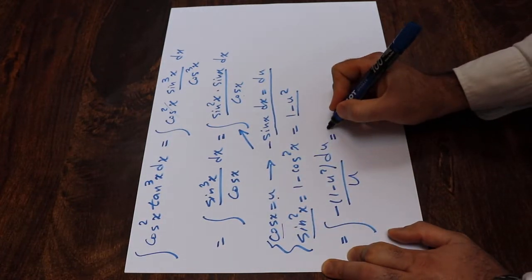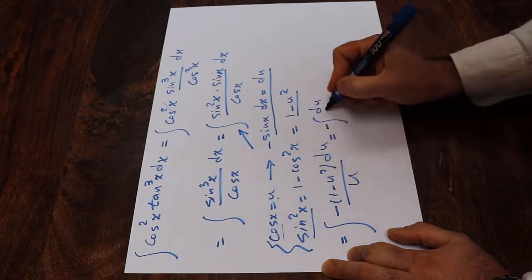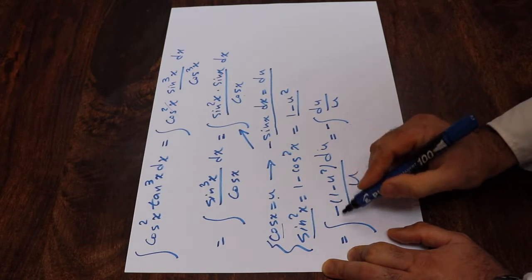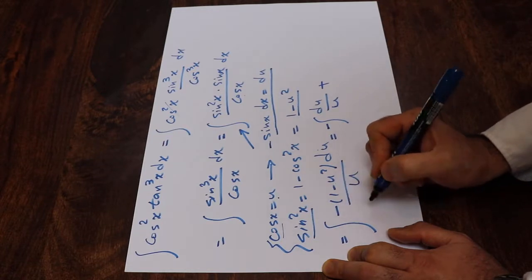So that one will be equal to minus integral of du divided by u. So I'm basically expanding this expression, 1 divided by u, and there is a minus sign here, so minus comes out. Plus, minus times minus is plus, u2 divided by u is u du.